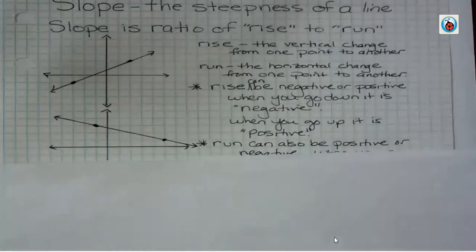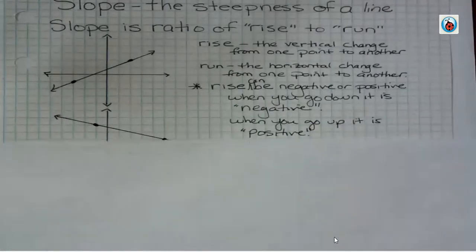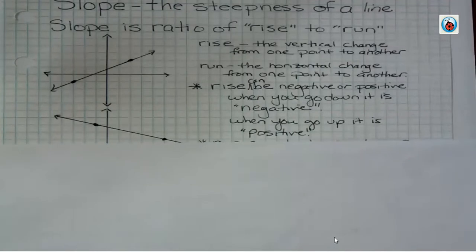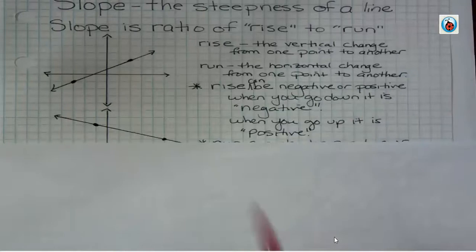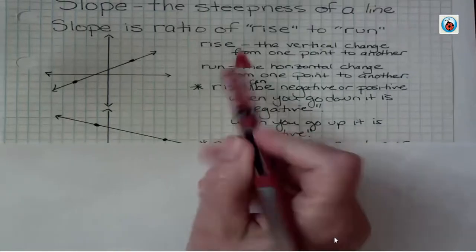When you have rise, that's the vertical change from one point to another, and run is the horizontal change from one point to another. So that's our definition for rise and run.